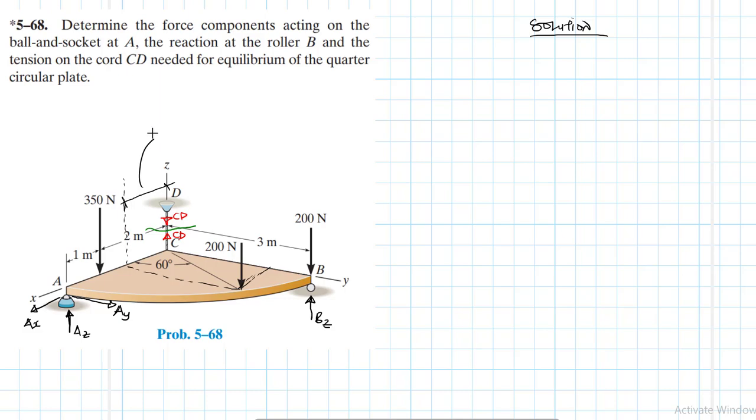So this one is going to be equal to the radius of this quarter circular plate, which is 3 cos 60. And we know that cos 60 is 0.5. Therefore, this just becomes equal to 1.5 meters.